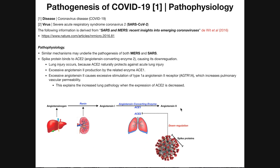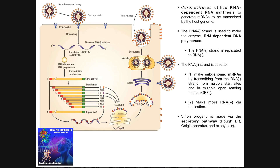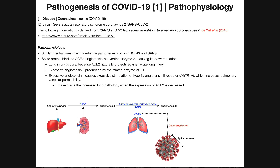Welcome to Catalyst University. My name is Kevin Tokoff. Please make sure to like this video and subscribe to my channel for future videos and notifications. In the previous video, we talked about the replication cycle of the coronavirus of 2019, which we termed COVID-19. In this video, we're going to talk about its pathophysiology, and then we're also going to look at how it evades the host cell immune system.